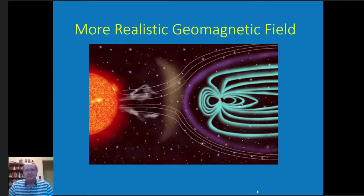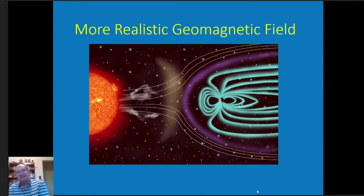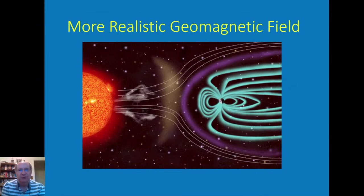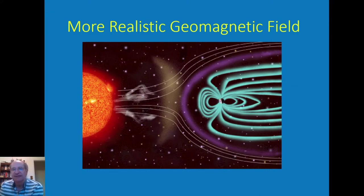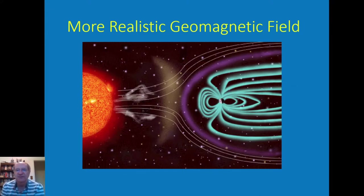This is a more realistic picture of the Earth's magnetic field — a rather famous cartoon that's foreshortened so everything is compressed. You can see that the Earth's magnetic field, shown in the light blue-green lines, is compressed by the pressure from the solar wind and the magnetic field of the sun.